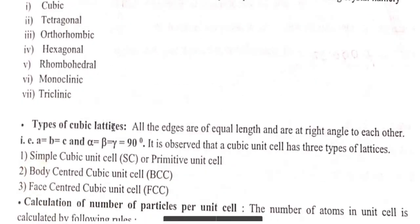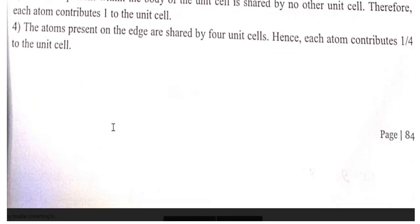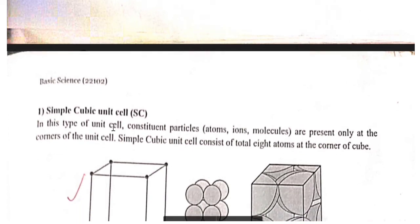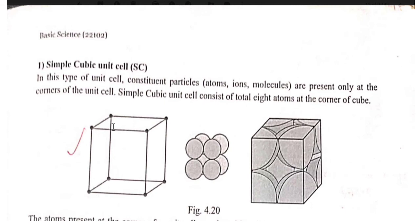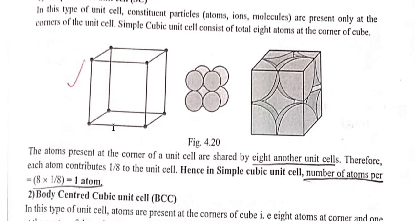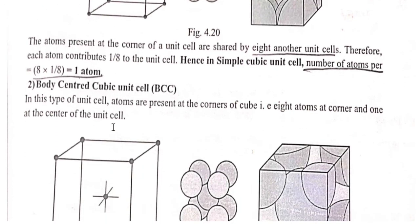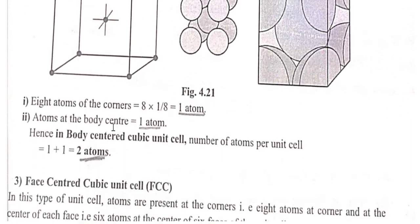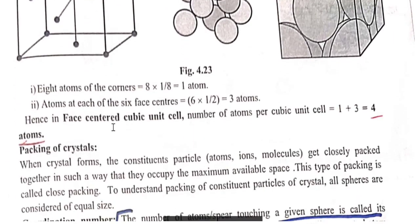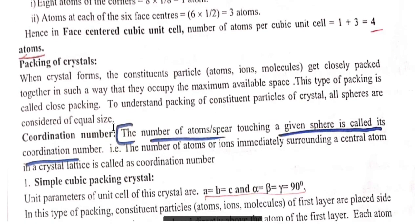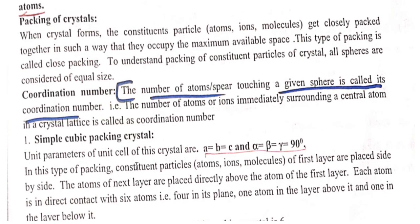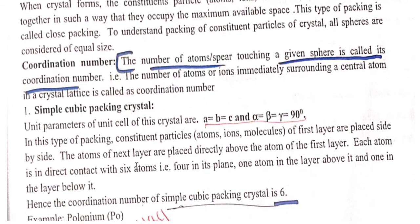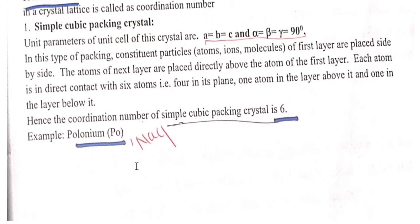Out of 14 types of crystal lattices, we will study four. First is simple cubic (SC): one atom is present per unit cell. Second is body-centered cubic (BCC): two atoms per unit cell. Third is face-centered cubic (FCC): three atoms per unit cell. Coordination number is the number of atoms touching a given atom. For simple cubic: a = b = c, alpha = beta = gamma = 90°, coordination number is 6, and examples are NaCl and polonium.